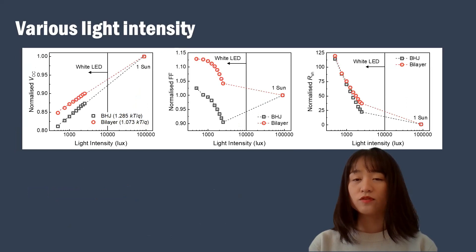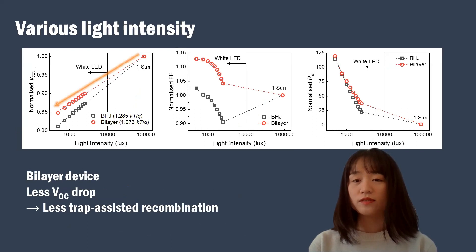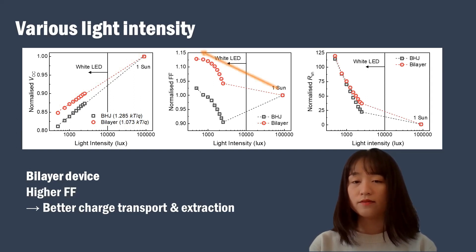We also checked detailed photovoltaic parameters under various light intensities. Firstly, from open circuit voltage versus light intensity relationship, we found that bilayer devices show less voltage drop with decreasing light intensities. This indicates bilayer devices have much less trap-assisted recombination compared to bulk-heterojunction devices. Secondly, from fill factor versus light intensity relationship, we observed that bilayer devices show higher fill factor than one sun and also compared to those of bulk-heterojunction. This implies better charge transport and extraction properties in bilayer devices, particularly for indoor light intensity.